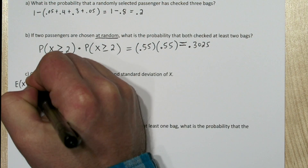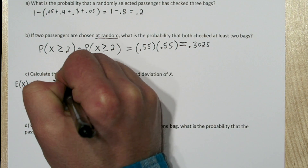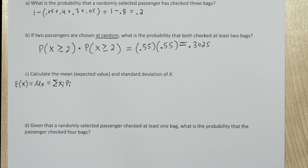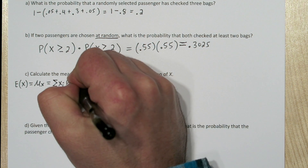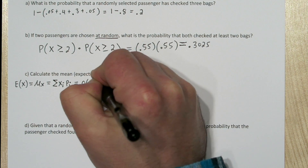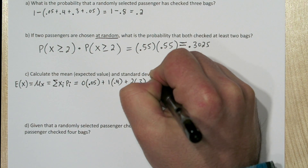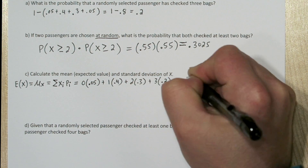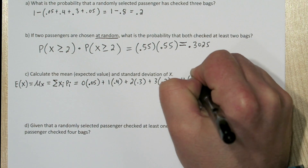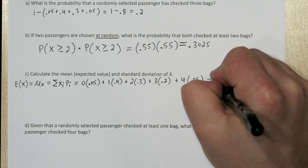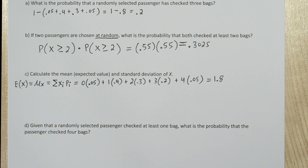This is a discrete random variable and the expected value is just going to equal the mean. This formula is included on the AP Stats formula sheet. All we have to do is take the sum of each of the number of bags times their associated probabilities. So: 0 bags × 0.05, plus 1 bag × 0.4, plus 2 bags × 0.3, plus 3 bags × 0.2, plus 4 bags × 0.05. We get the average number of bags per passenger is 1.8 bags. We can also say the number of bags we expect a randomly selected passenger to check is 1.8.